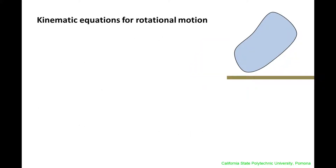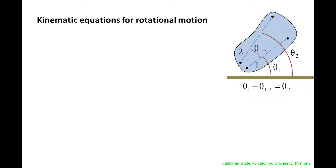We describe rotational motion using angular quantities. Let's pick two arbitrary lines on the rigid body shown here. The angle between line 1 and the horizontal is theta1, and the angle between line 2 and the horizontal is theta2. The angle between line 1 and line 2 is theta12. From the diagram, theta1 plus theta12 is equal to theta2. Notice that theta12 will always be constant because the distance between the two lines is constant in time.